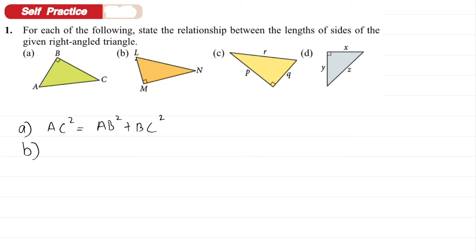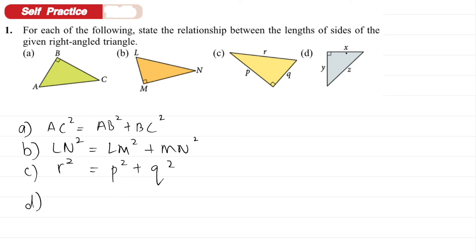For C: the hypotenuse is R, so R squared equals P squared plus Q squared. For D: the hypotenuse is Z, so Z squared equals X squared plus Y squared.